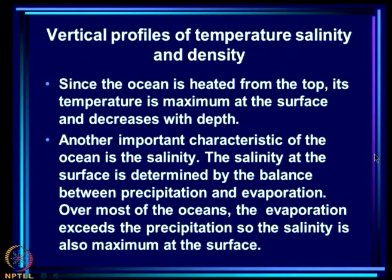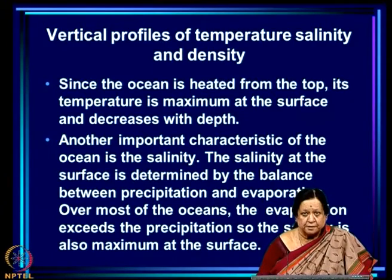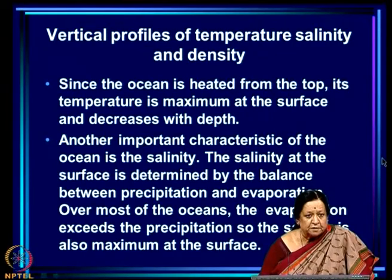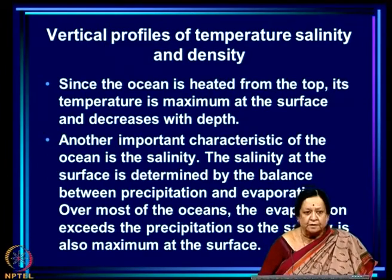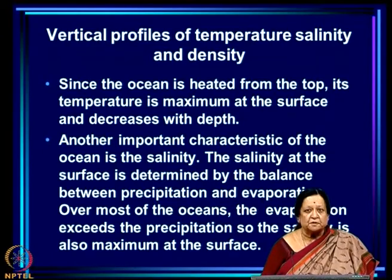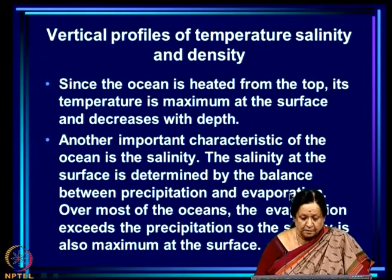What is the vertical profile of temperature, salinity, and density over the ocean like? Since the ocean is heated from the top, its temperature is maximum at the surface and decreases with depth. Another important characteristic is salinity — the salt content in the water. The salinity at the surface is determined by the balance between precipitation and evaporation. If evaporation exceeds precipitation, water evaporates and salt gets left behind, increasing salinity. If there is rainfall, fresh water mixes with salt water and the salt content decreases.